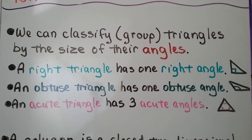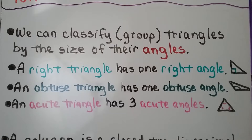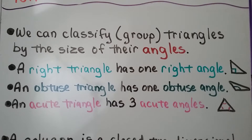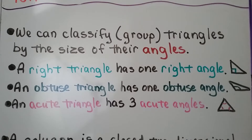A right triangle has one right angle — it's got a little box. An obtuse triangle has one obtuse angle; it's this angle right here that's greater than a right angle. An acute triangle has three acute angles — it's got three cute little angles inside.